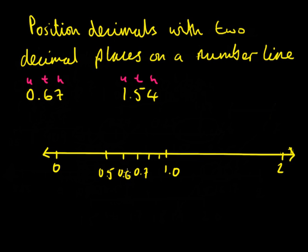So we should have 10 marks between 0.6 and 0.7. So that's 0.61, 0.62, 0.63, 0.64, 0.65, 0.66, 0.67, 0.68, 0.69.